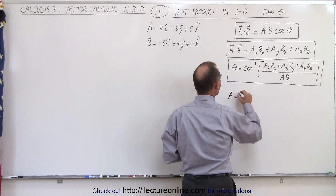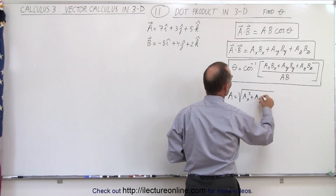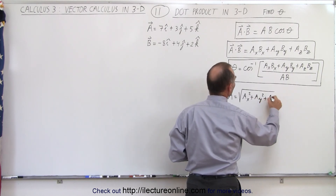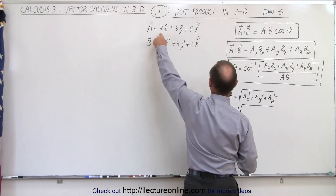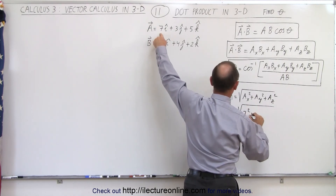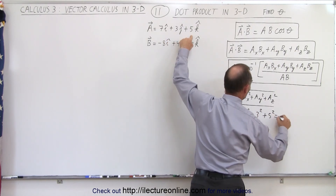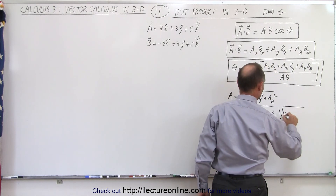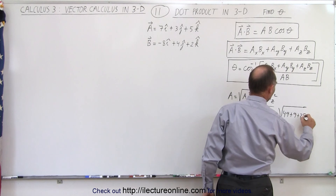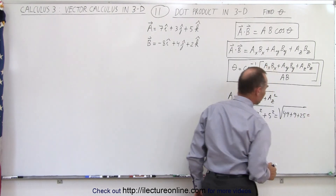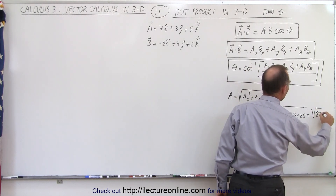Starting with the magnitude of A, that is equal to the square root of the X component squared plus the Y component squared plus the Z component squared. In this case, that would be the square root of 7 squared plus 3 squared plus 5 squared, which equals the square root of 49 plus 9 plus 25 — that's the square root of 83.